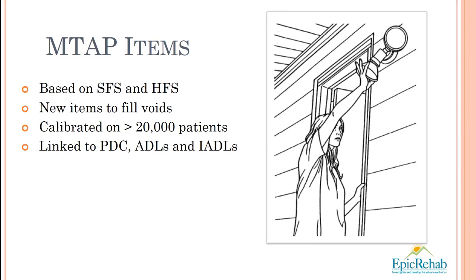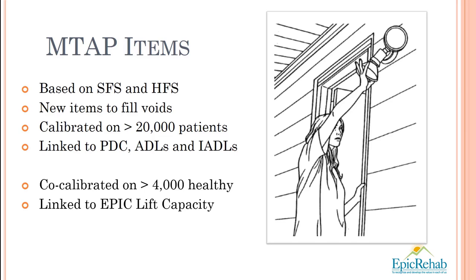To summarize before we get into using the MTAP analytics software: the MTAP is based on the spinal function sort and the hand function sort, with new items added to fill the voids. We calibrated the library of MTAP items on more than 20,000 patients, and we have linked responses to the United States Department of Labor's Physical Demand Characteristics, or PDC, system, as well as to activities of daily living and instrumental activities of daily living. We have also calibrated MTAP responses to EPIC lift capacity performance data.